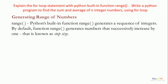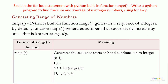We will see how to generate a range of numbers. In Python there is a built-in function named range. Python's built-in function range generates a sequence of integers. By default, the function range generates numbers that successively increase by 1, which is known as step size. There are different formats for the range function depending on how many parameters are used.